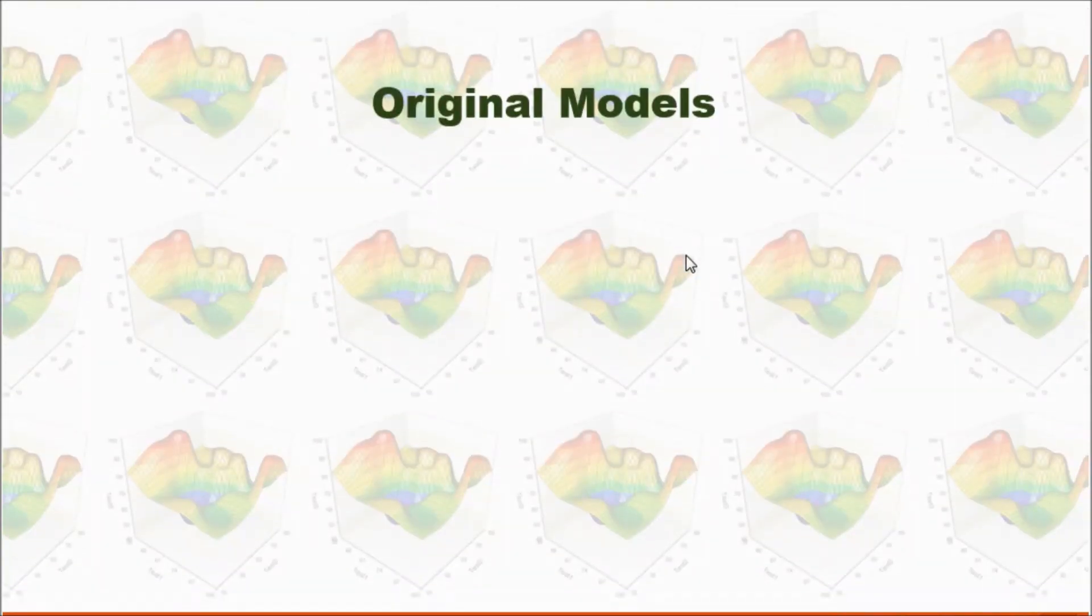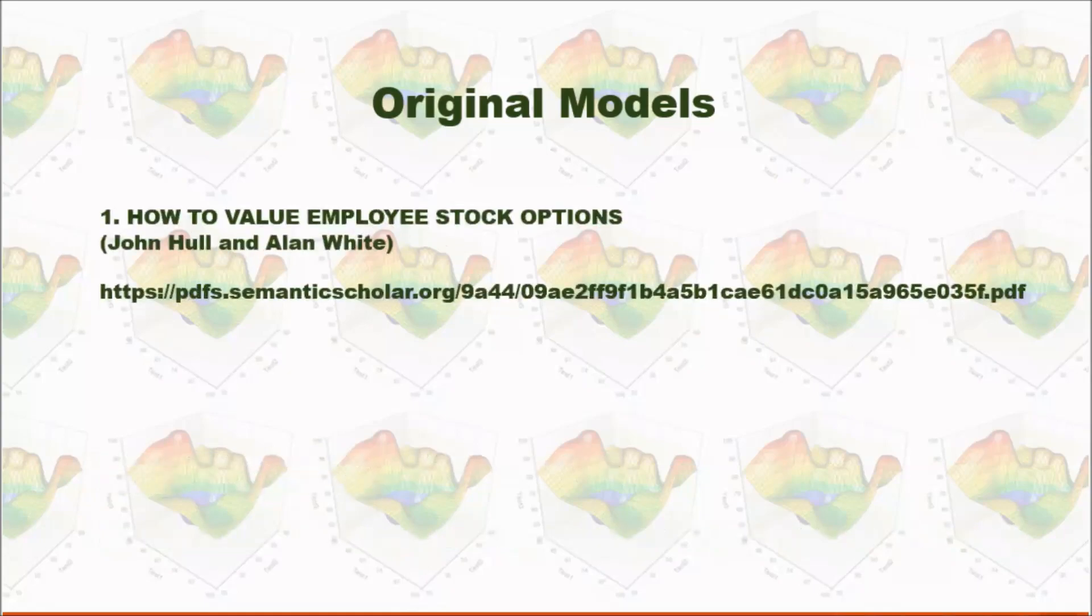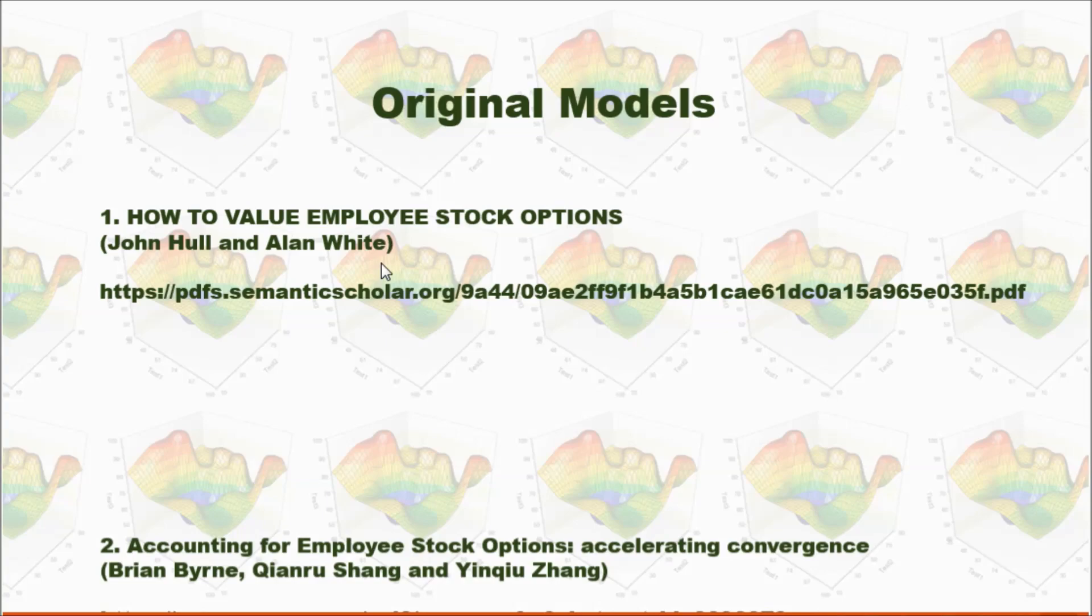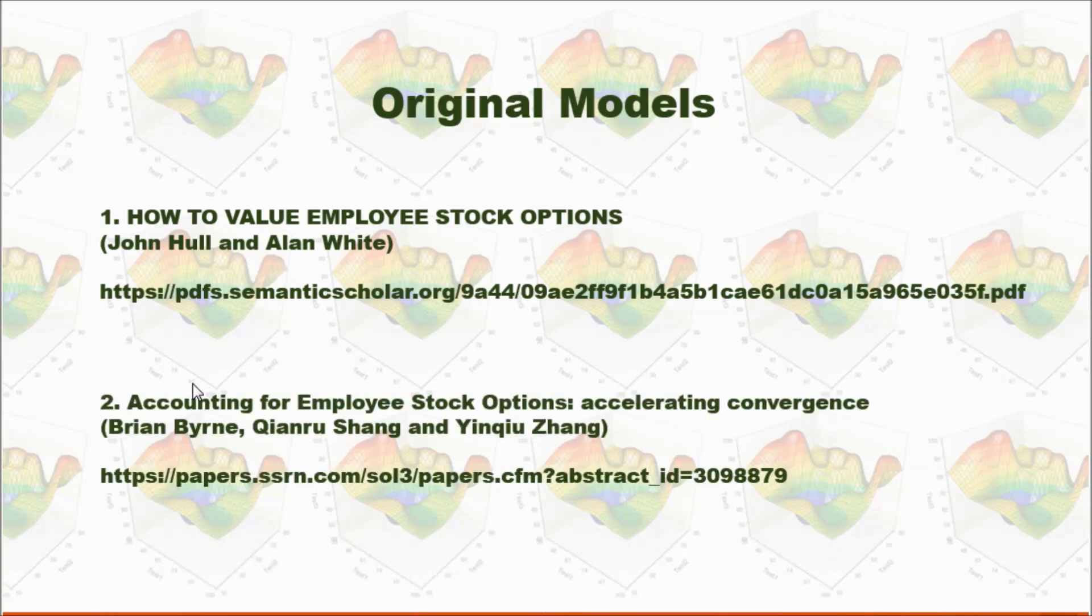This is based on two papers. The first paper is called How to Valuate Employee Stock Options by John Hall and Alan White. The second paper is called Accounting for Employee Stock Options, Accelerating Convergence. Basically, the second paper is based on the first paper with some enhancement.